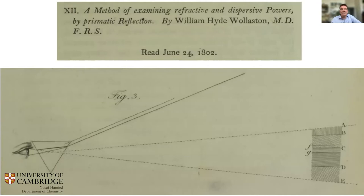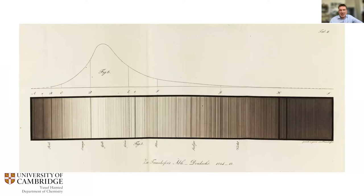This first observation of dark lines was made in 1802 by Wollaston, but then Fraunhofer really brought this to perfection. He was an instrument maker who used spectroscopes — essentially telescopes with prisms — and he split up the spectrum, seeing many dark lines against the colored spectrum.